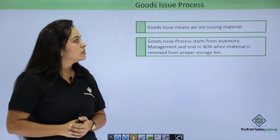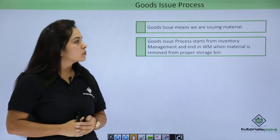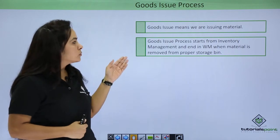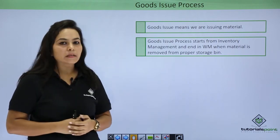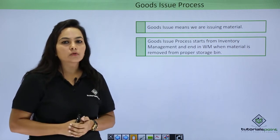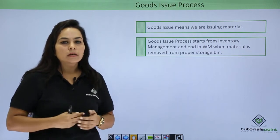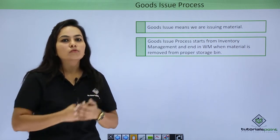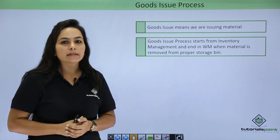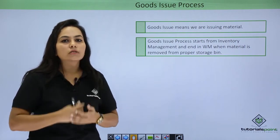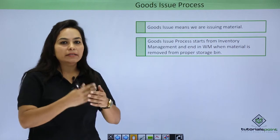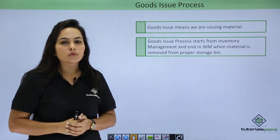Now let's move to the Goods Issue Process. Goods Issue means we are issuing material. The Goods Issue Process will start from Inventory Management and it will end in WM. For example, suppose we have to issue goods to someone. In this case we will create a sales order, and in reference to that sales order an outbound delivery will be created or a material document will be posted. Our IM work will be complete at that point, and then we will pick goods from WM, that is from the warehouse, by creating a transfer requirement followed by a transfer order.